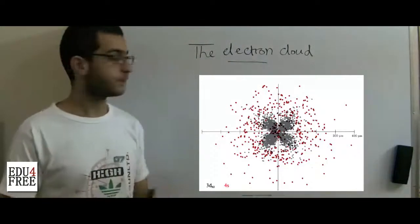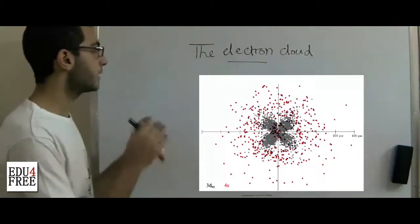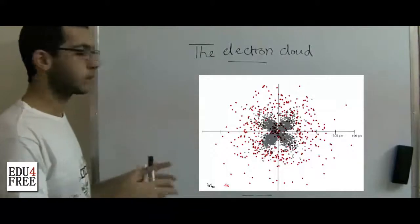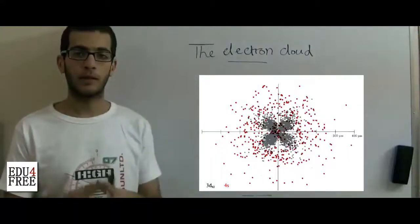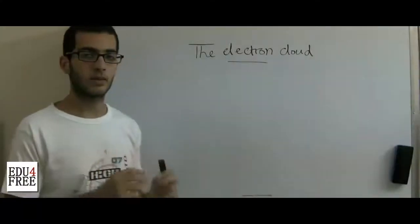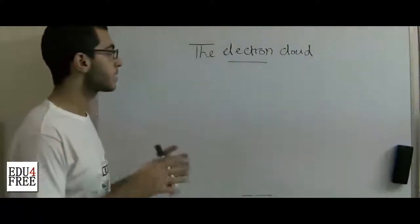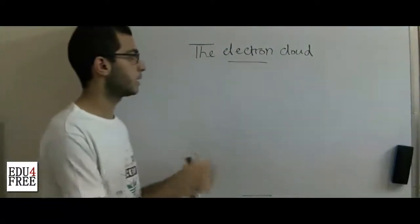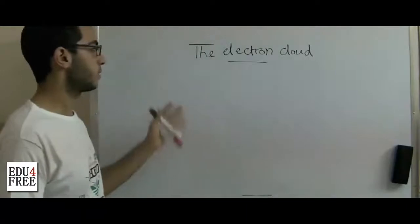The points of high density represent the places where it's highly probable to find the electron, because it was found many times at this certain area. And the places with low density represent the area where there is a low probability of finding the electron there.